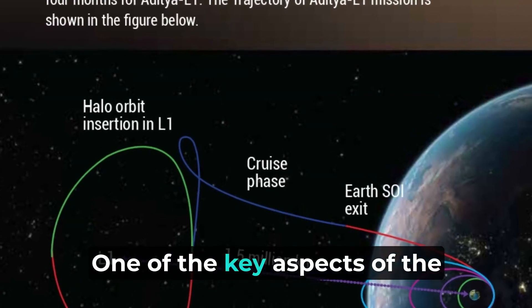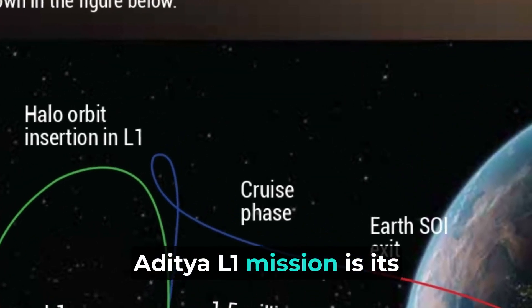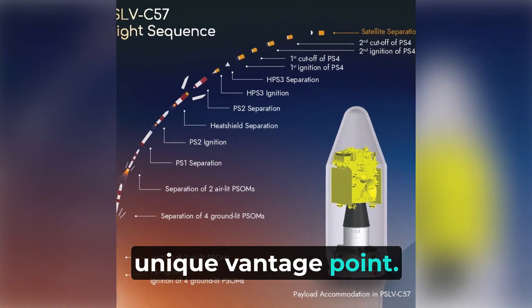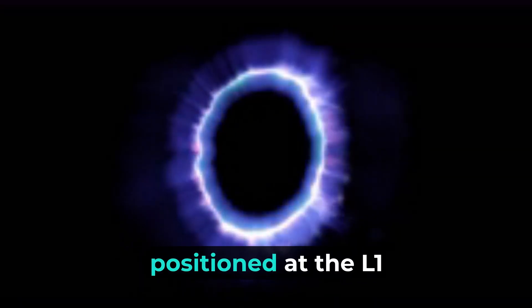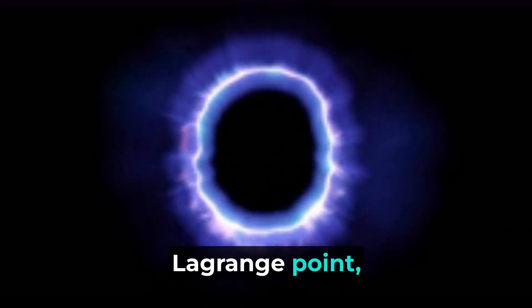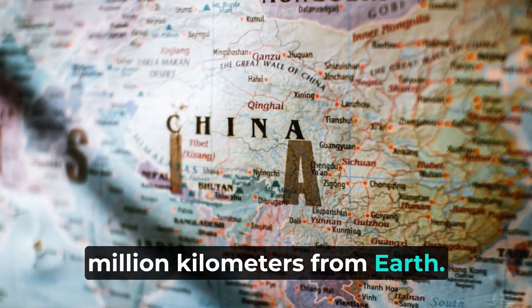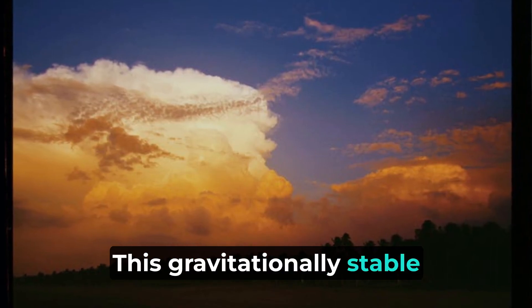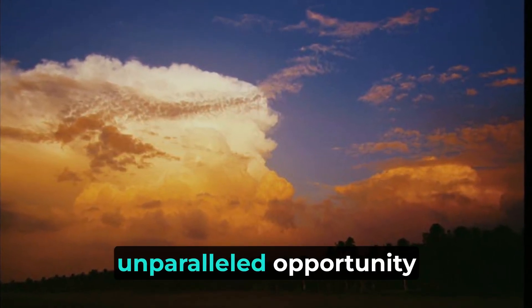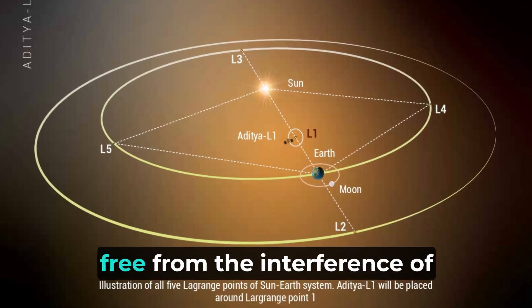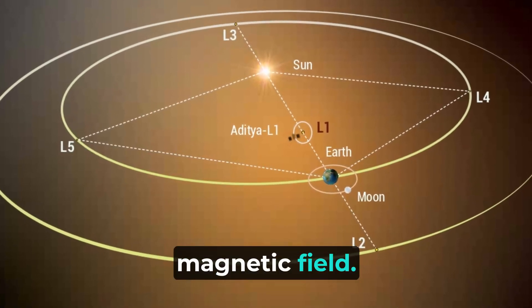One of the key aspects of the Aditya L1 mission is its unique vantage point. The spacecraft will be positioned at the L1 Lagrange point, situated approximately 1.5 million kilometers from Earth. This gravitationally stable location provides an unparalleled opportunity to study the sun, free from the interference of Earth's atmosphere and magnetic field.